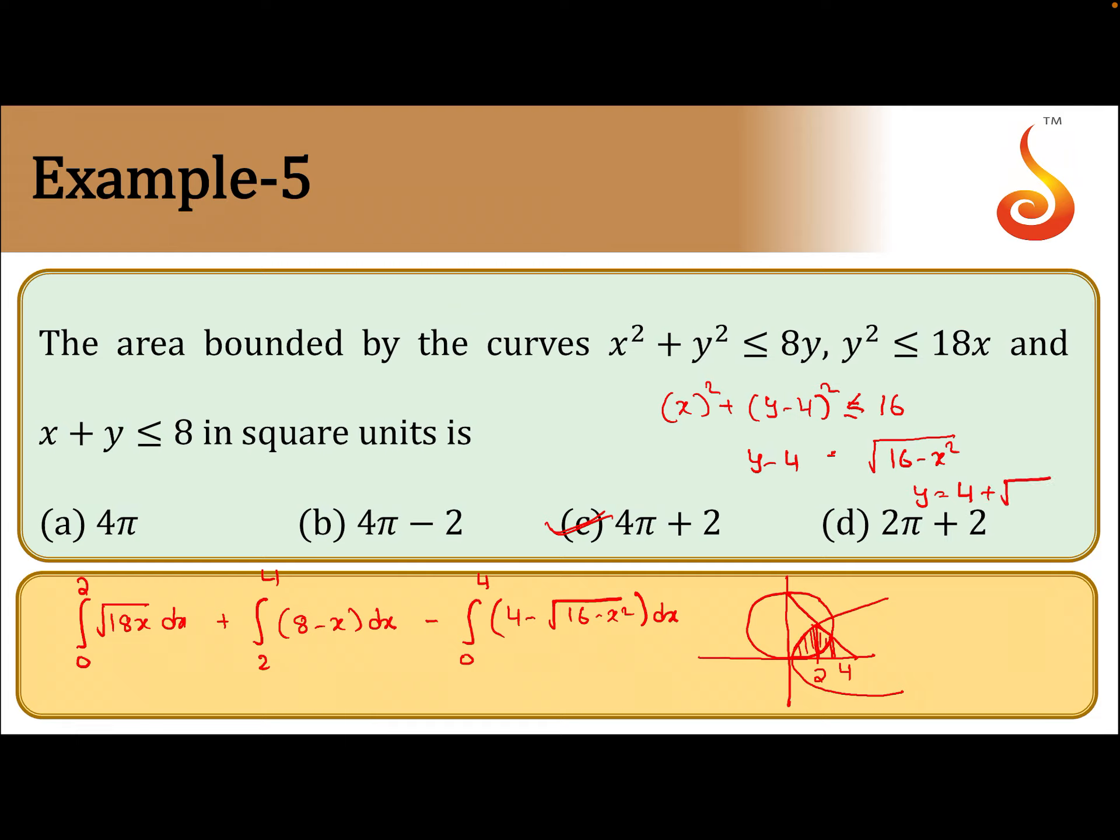Because x² + (y - 4)² = 16, so 16 - x² = (y - 4)², or y = 4 ± √(16 - x²). If we evaluate it, we get 4π + 2.